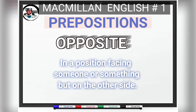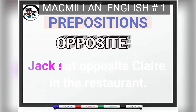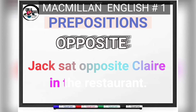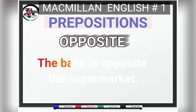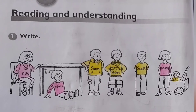Now let's look at the preposition OPPOSITE. When someone or something is completely different from someone or something else — a word with a meaning completely different from another — we say they are opposites. But as a preposition, OPPOSITE means facing someone or something on the other side. For example: Jack sat opposite Clara in the restaurant.